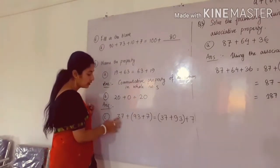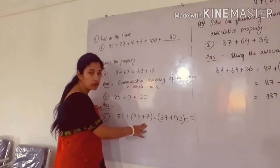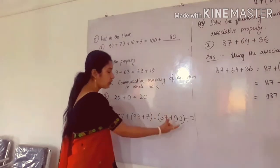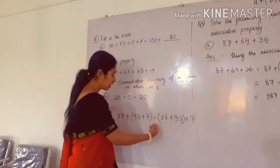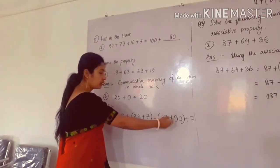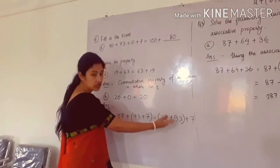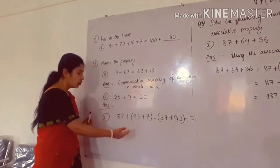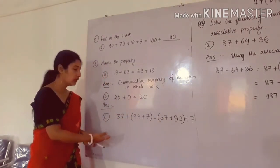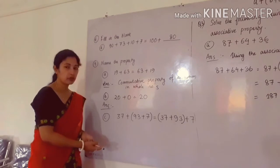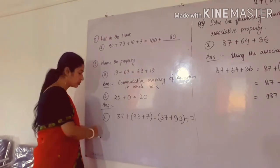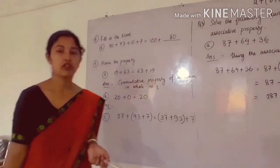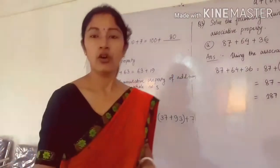Next, in number C, we have 3 whole numbers, and in bracket we have 2 whole numbers. The order is changed — the terms in bracket have changed in the right hand side part. As you already know, this is the associative property of addition in whole numbers. So in the answer you have to write: associative property of addition in whole numbers.